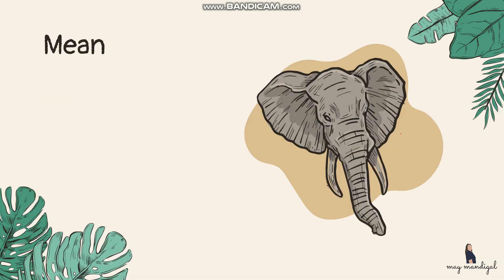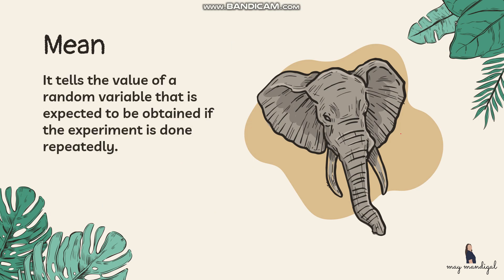Let's define first what the mean of a discrete probability distribution is. It tells us the value of a random variable that is expected to be obtained if the experiment is done repeatedly — it's the value we expect if we keep doing the experiment. This is also called the expected value.